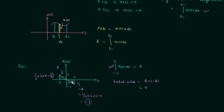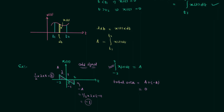If you examine this signal you will find it is an odd signal. This is an odd signal because the left-hand side is the mirror image of the right-hand side, or we can say this signal is anti-symmetric about the y-axis. So this is all for this example. Now let's move to example number 2.